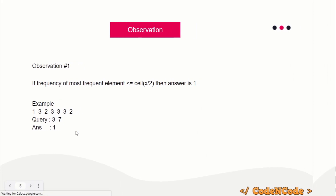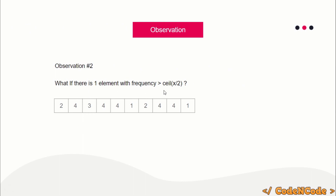Now, if one element has frequency greater than ceil(x/2), it may sound trivial, but it's important to prove that there cannot be two elements both with frequency greater than ceil(x/2). There can only be at most one such element. If there is one element with frequency greater than x/2, that is a problem — we can no longer take the whole subarray as one subsequence and must divide it into multiple subsequences.